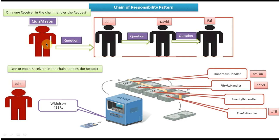The second scenario is: one or more receivers in the chain handle the request. Here you can see an ATM machine with multiple handlers — a 100-rupee handler which gives 100-rupee notes, a 50-rupee handler which gives 50-rupee notes, a 20-rupee handler which gives 20-rupee notes, and a 5-rupee handler which gives 5-rupee notes. On the left side you can see John, the customer.